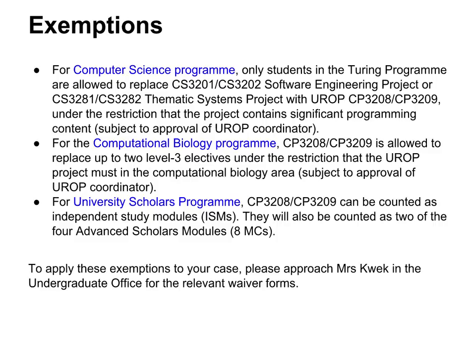Some of you may be in certain programs. If you happen to be a Turing program student or another special program student, you have some exceptions that can be invoked. Otherwise, it just counts as a normal module that you would do for research work. If you fit any of the exemptions, go to our undergraduate office, get the form, and fill it out whenever you can — there's no rush. You can do this after you're almost done with UROP and we'll make sure the credits lie where they're supposed to be.